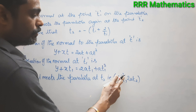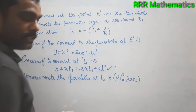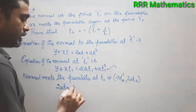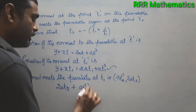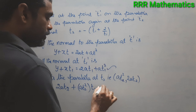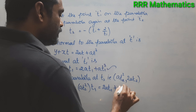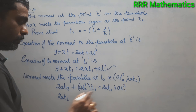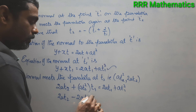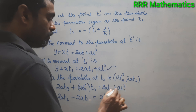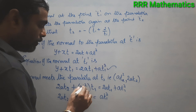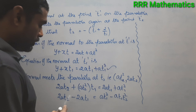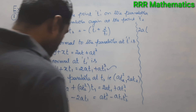Substituting the point (at2², 2at2) into the normal equation: 2a·t2 + a·t2²·t1 = 2a·t1 + a·t1³. Bringing terms across: 2a·t2 - 2a·t1 = a·t1·t1² - a·t1·t2², which gives 2a(t2 - t1) = a·t1(t1² - t2²).